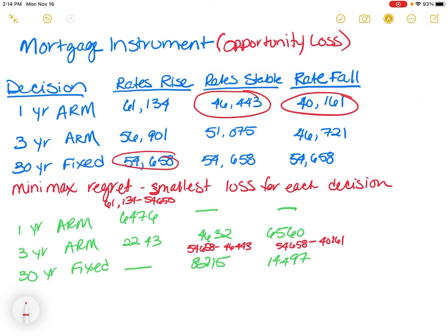I've taken our mortgage instrument table and circled in red the opportunity that provides the least amount of interest in each scenario. If rates rise, the 30-year fixed would be the best scenario at $54,658. If rates are stable, the one-year ARM is best at $46,443. And if rates fall, the one-year ARM is still the best scenario.